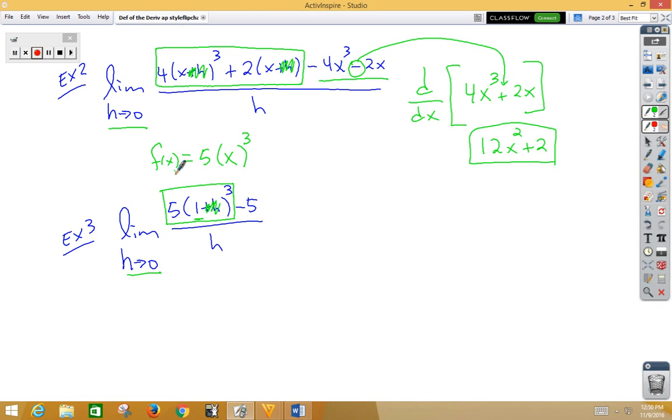What this question really is asking is find f prime of 1. Well, the derivative f prime of x would be 15x squared, and then f prime of 1 would simply be 15. So again, when you see a number instead of an x, that means you need to plug in that number after the derivative, and you want to think of that number temporarily as an x.